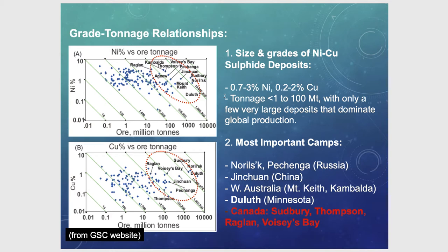Most of these deposits are really related to very voluminous magmatic events — either flood basalt provinces or extremely large ultramafic intrusive complexes. You usually need a large volume of magma that interacts with the immiscible sulfides to actually extract a significant amount of nickel, copper, and platinoids.